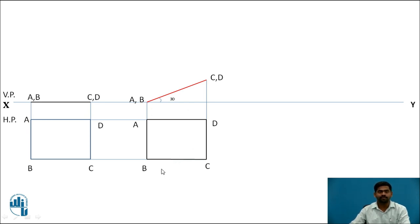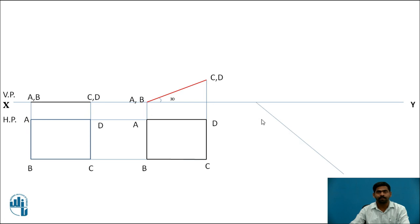For the third stage, the condition with the VP is considered, because in the second stage the condition with the HP was carried out. In the third stage, inclination is given, and as per the problem, side AB lies on an inclined line. So draw a line with an inclination of 45 degrees, and place the top view of the second stage — the ABCD object — on this 45-degree line such that AB lies on this 45-degree mark.